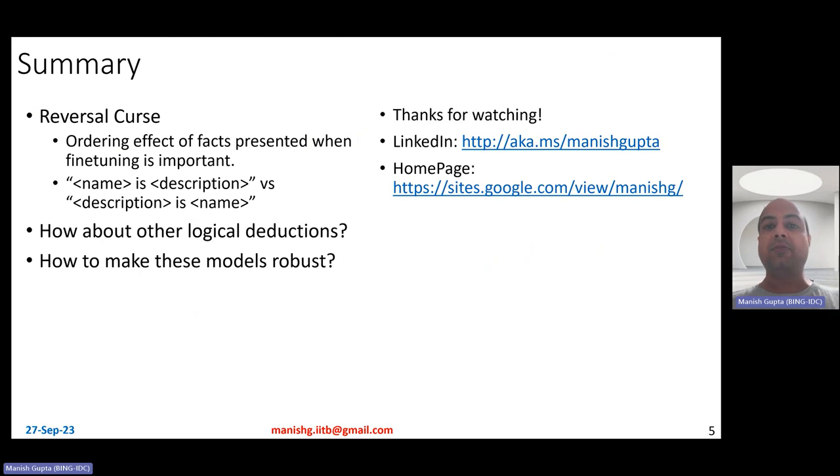So in short, in this video, I talked about the reversal curse for large language models. Basically, ordering effect when fine-tuning is important. So if you basically present a fact as name is description, you should not expect the model to do really well when you query the model with description and ask the model to come up with the name, and this holds vice versa as well. So I showed you experiments with name is description versus description is name. And we did see two experiments, one on fictitious celebrities and one on real celebrities. Either way, reversal curse holds.